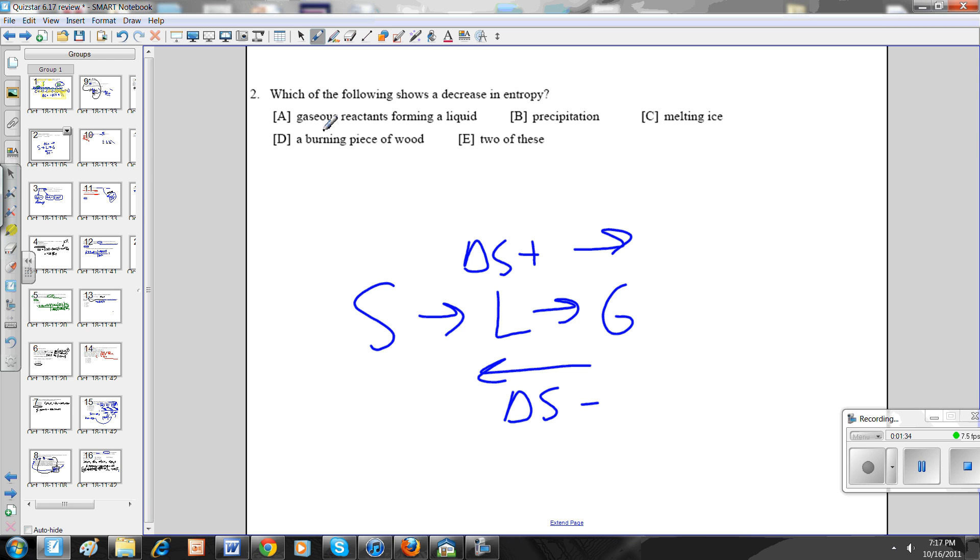So if you look, the first one, gaseous reactants forming a liquid. You're starting here. Gaseous forms a liquid going that direction. That is going to be a decrease in entropy. So there's one of them. Precipitation, that's where something's aqueous and it goes back to being a solid. If you look, we said aqueous is the same thing as starting out as a liquid. Going back this way, forms a precipitate. So both A and B are decreases in entropy.